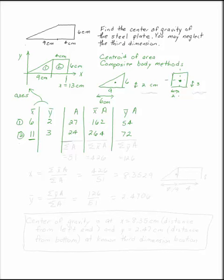What we want to do at this point is find the sum of the A's, the sum of the x bar A's, and the sum of the y bar A's. So all I have to do is add up these columns. 27 plus 24 is 51.